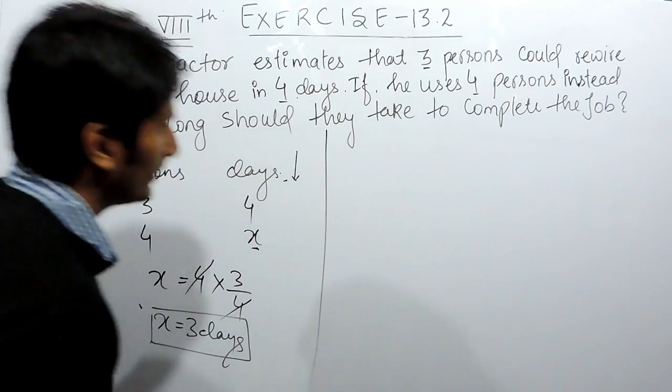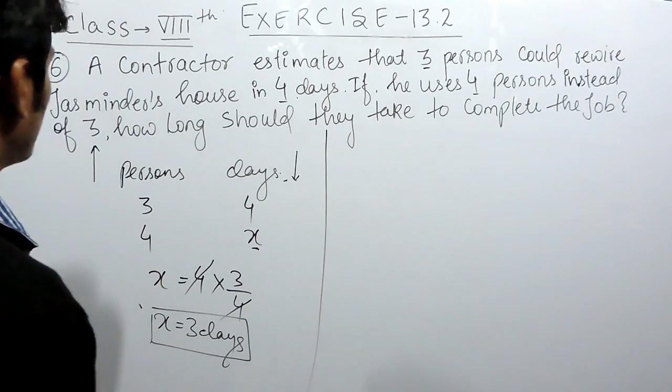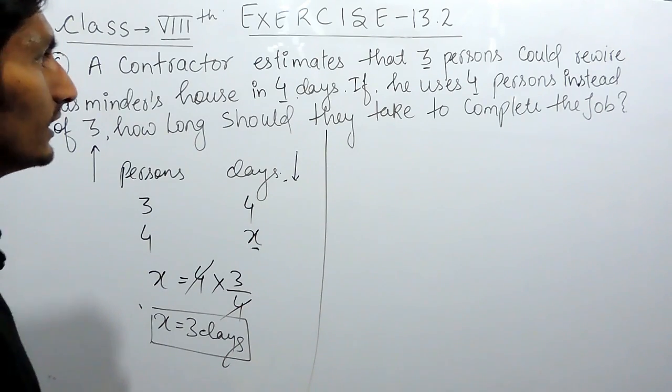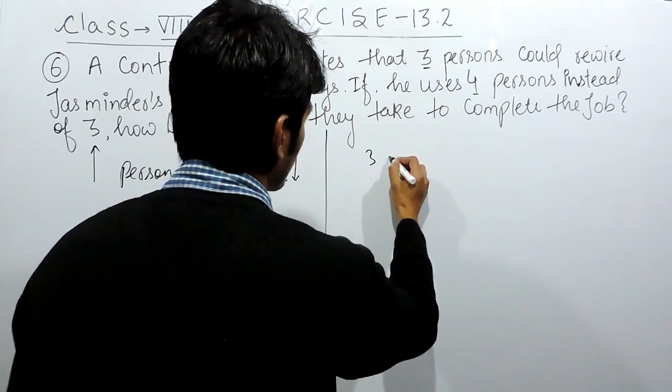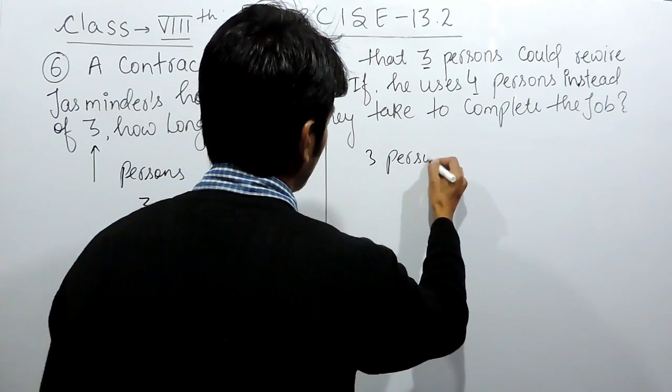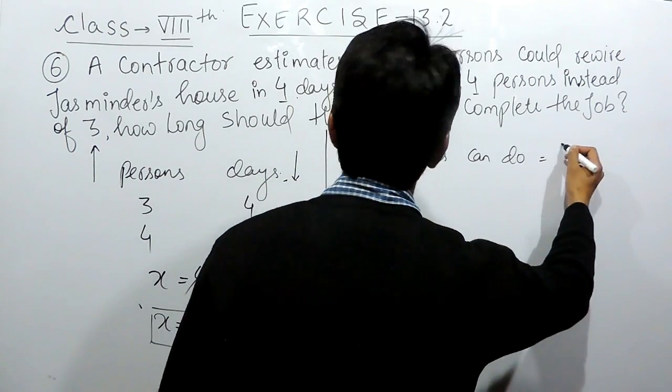There could be another method. And it is given that 3 persons can rewire Jasminder's house in 4 days. So obviously, 3 persons can do the work in 4 days.